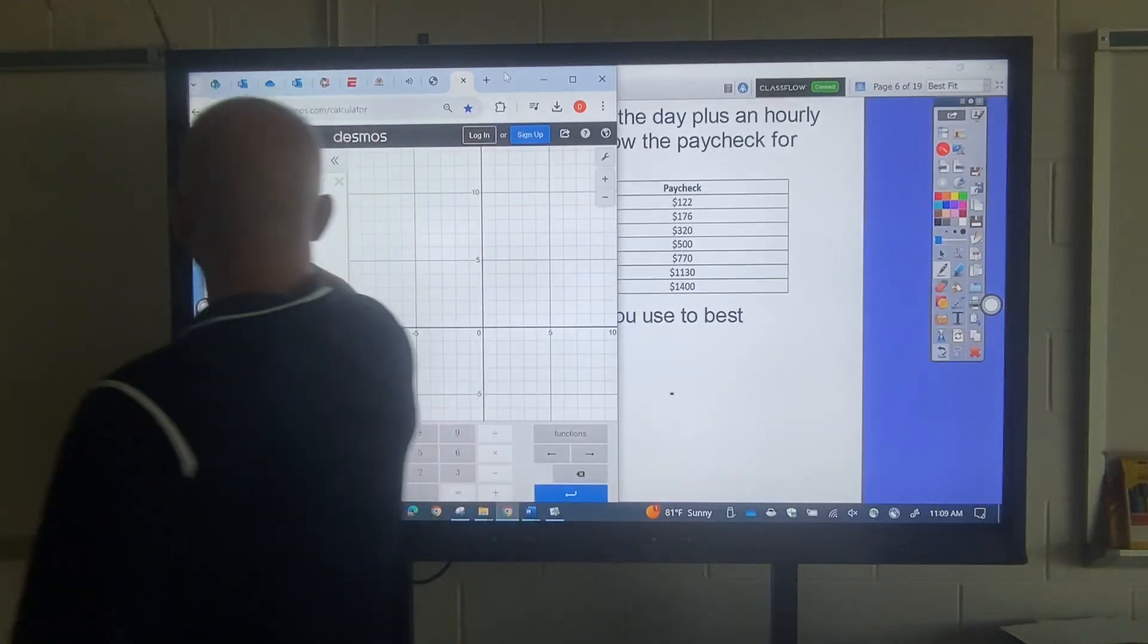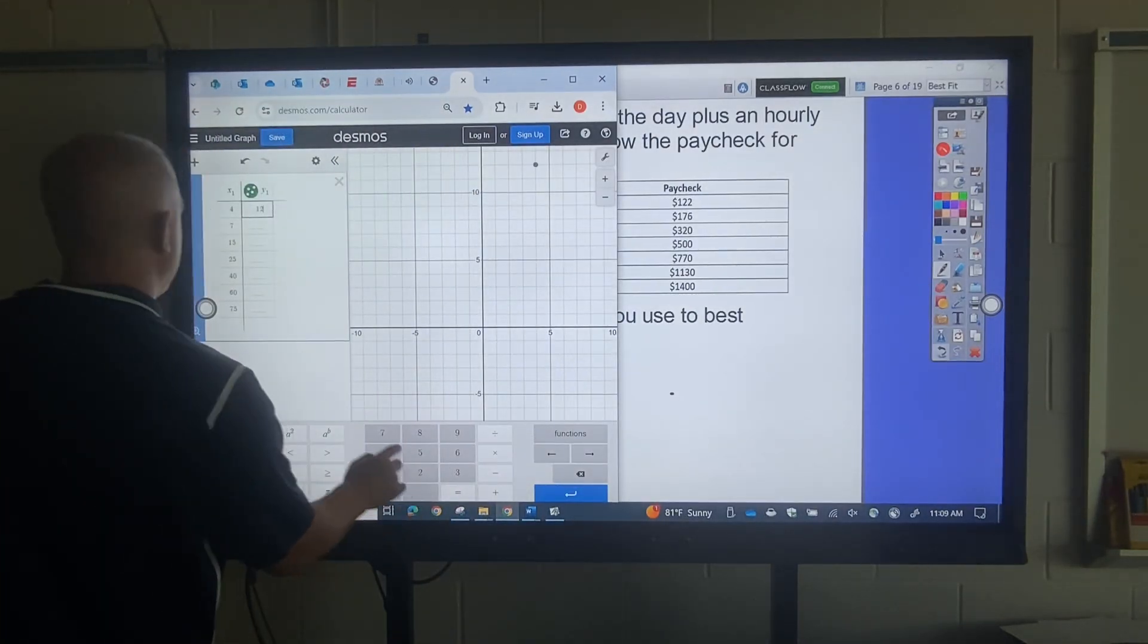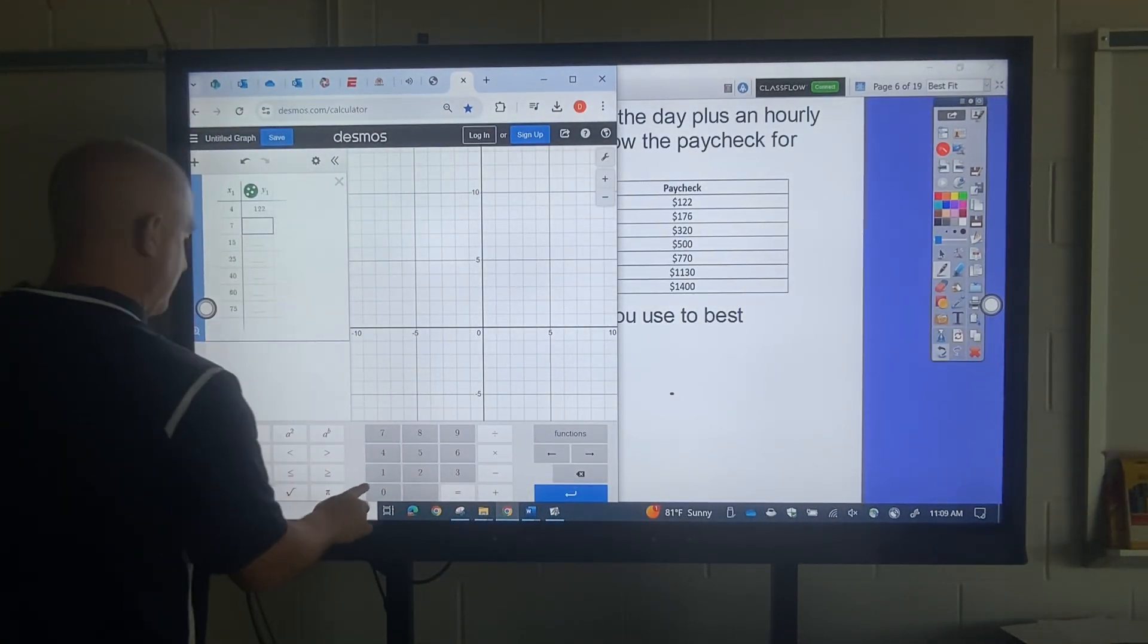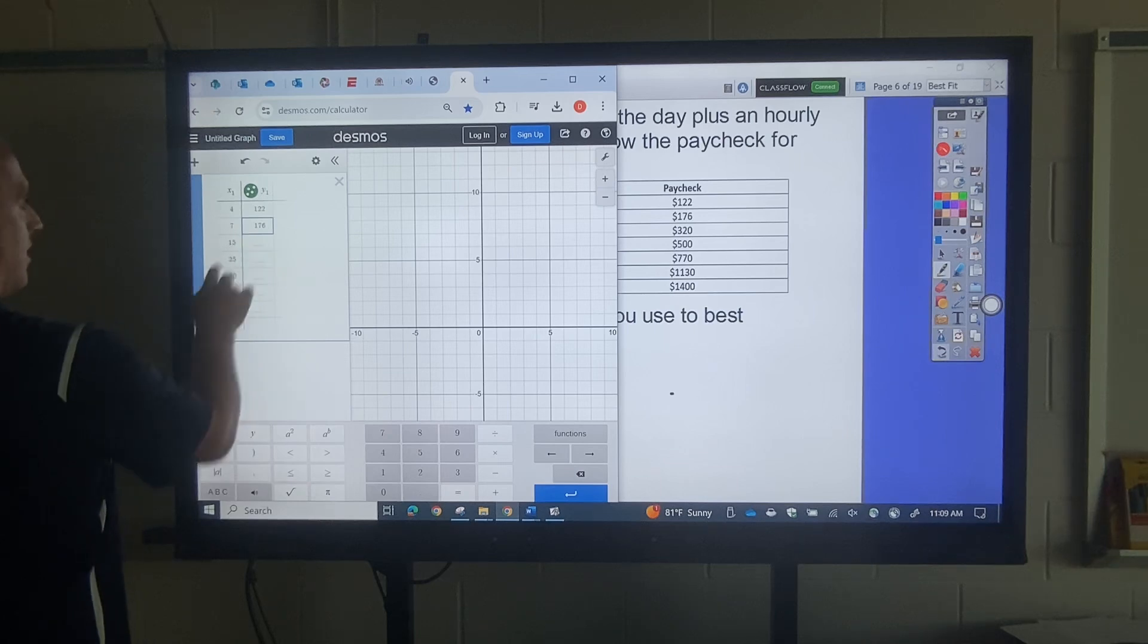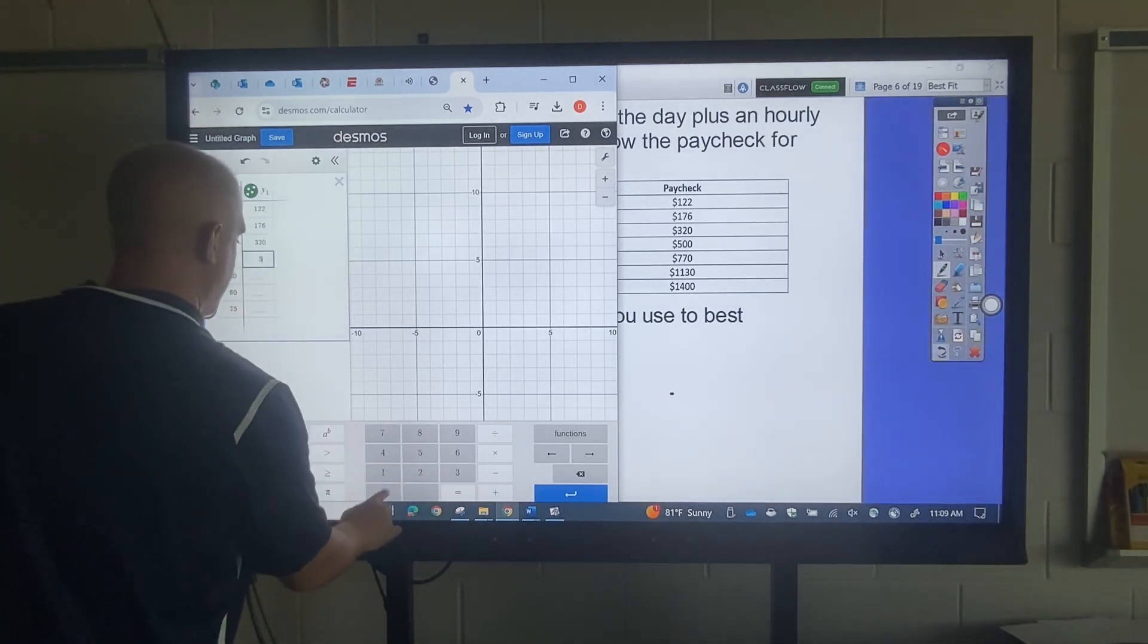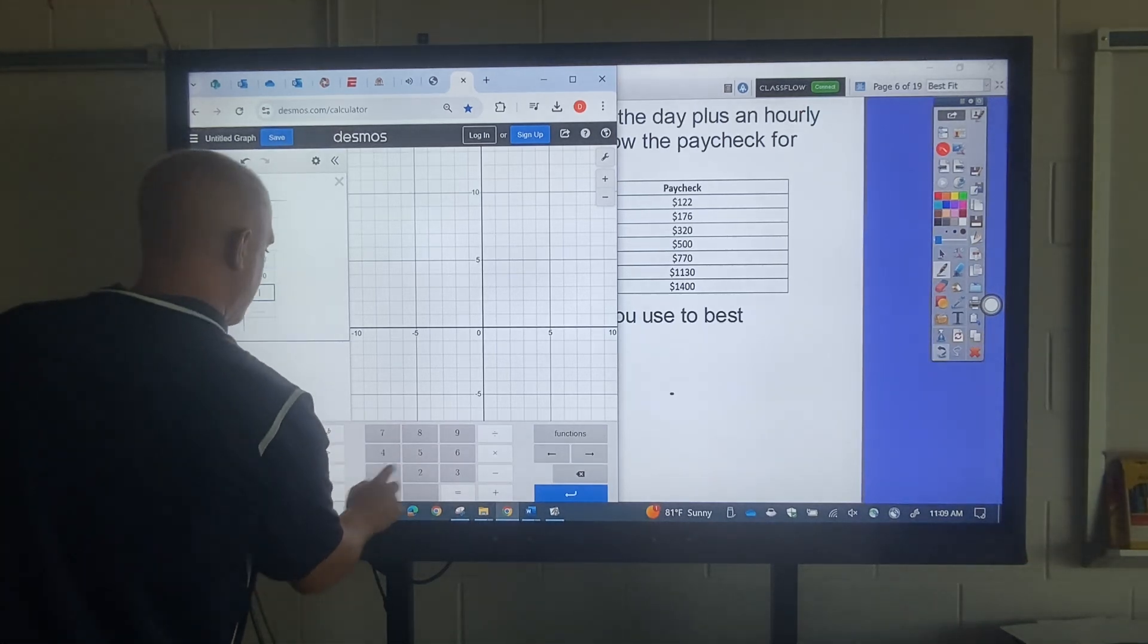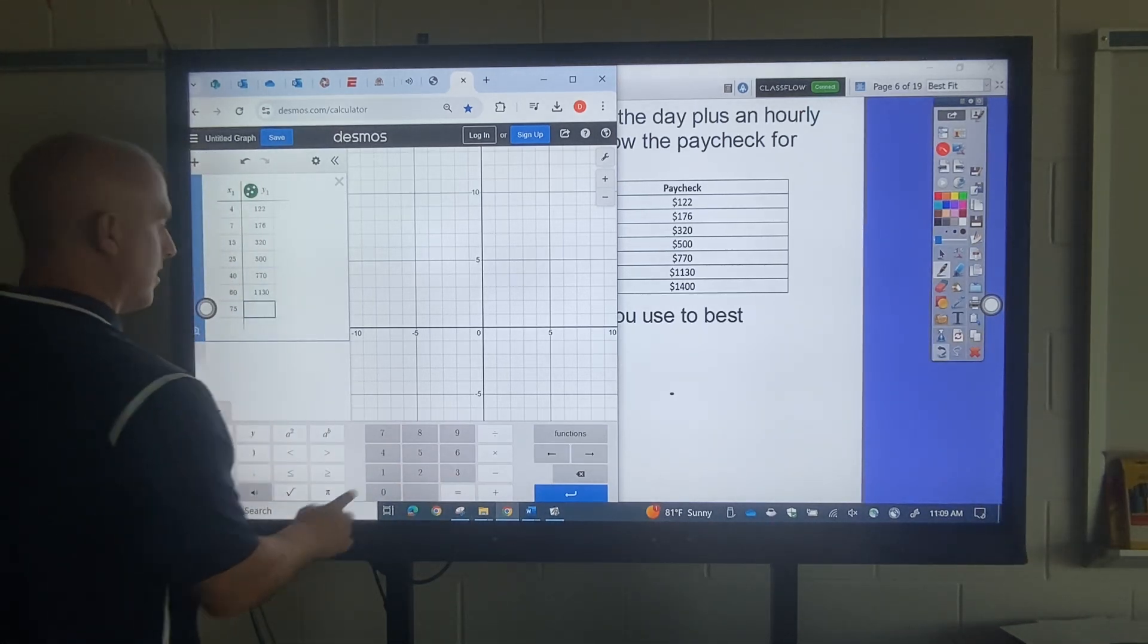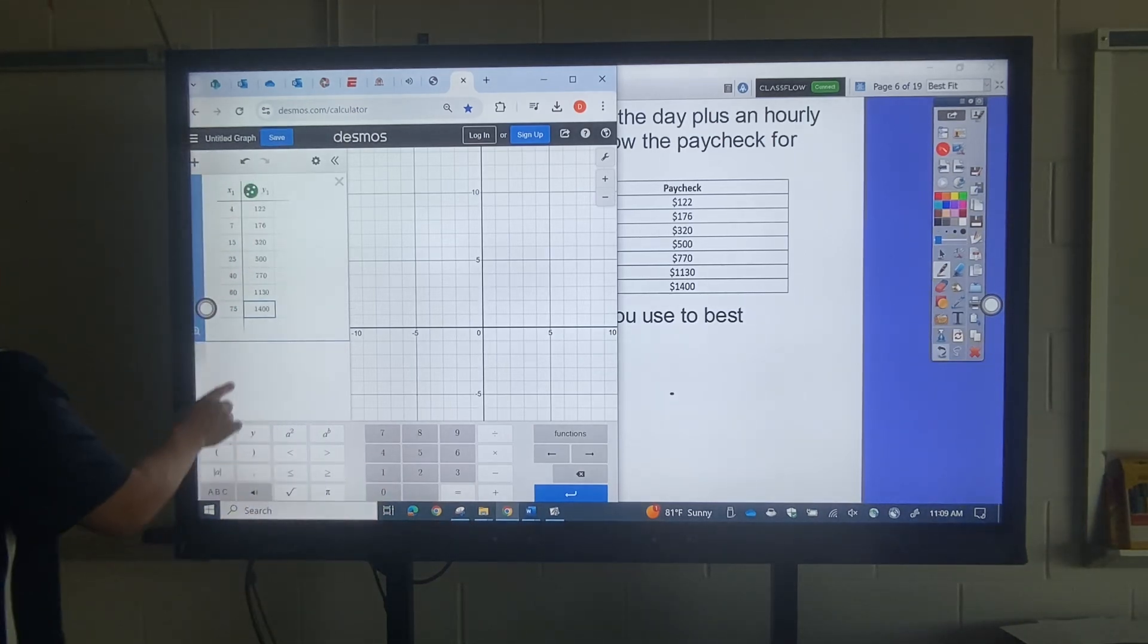So what I would do over here, just so I can see this a lot faster, 122, 176, 320, 500, 770, 1130, 1400.